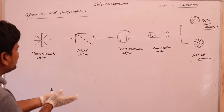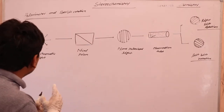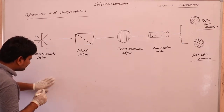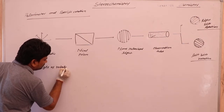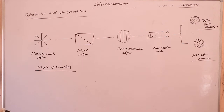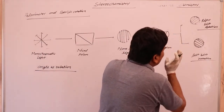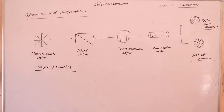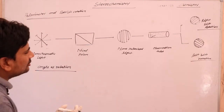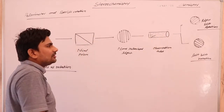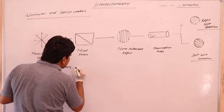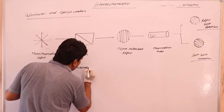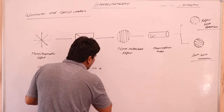The polarimeter is the apparatus used to measure the angle of rotation. The angle of rotation refers to the angle by which the plane polarized light is rotated — either to the right side or the left side — after passing through the solution in the observation tube.